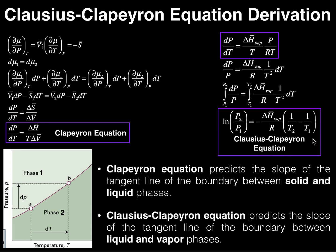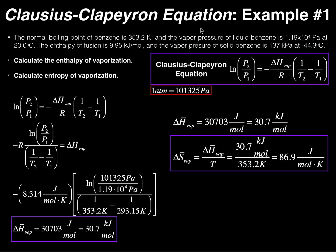The Clausius-Clapeyron equation in its most useful form is: the natural log of P2 over P1 equals negative delta H molar of vaporization over R, times the quantity one over T2 minus one over T1. One thing you have to watch out for: sometimes you'll see P1 over P2 in the natural log, which causes the negative sign to go away, so you'd just see a positive delta H of vaporization over R. That's the only thing that's really confusing about this equation. We can use this equation to solve problems in physical chemistry, and we're going to do that in the next video.